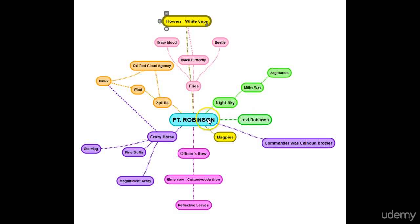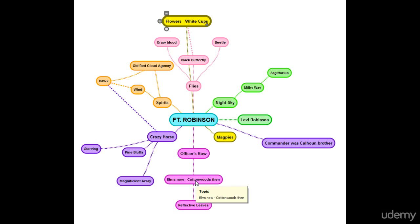I started with my central theme of Fort Robinson. In addition to taking photos while I travel, I also take a lot of notes. I went back through my notebook and these were all things I had jotted down: the officers' row is lined with elm trees, but it was cottonwoods — and the leaves are very reflective, so they're beautiful when they move in the wind.